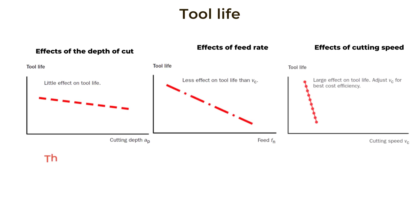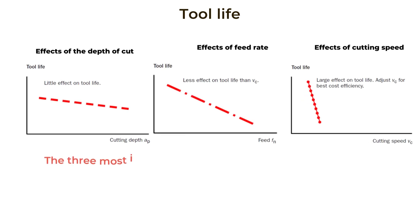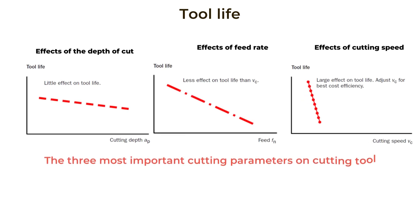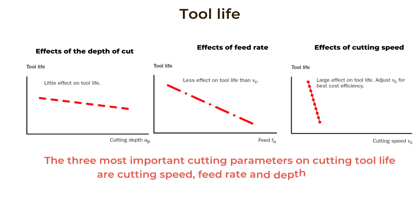The graphics show the effect of depth of cut, feed rate, and cutting speed parameters on the cutting tool life in the turning process. If the depth of cut is too low, chip control becomes difficult, vibration and heating increase, and it is also not an economical machining method.